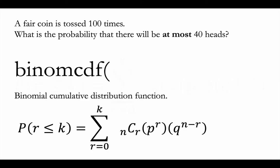So in this video we'll look at a sample problem: a fair coin tossed a hundred times. What's the probability that there will be at most 40 heads? So what does that mean? That means we're looking at the probability of getting 0 or 1 or 2 or 3 or 4 or 5 or 6 or 7, all the way up to 40 heads.